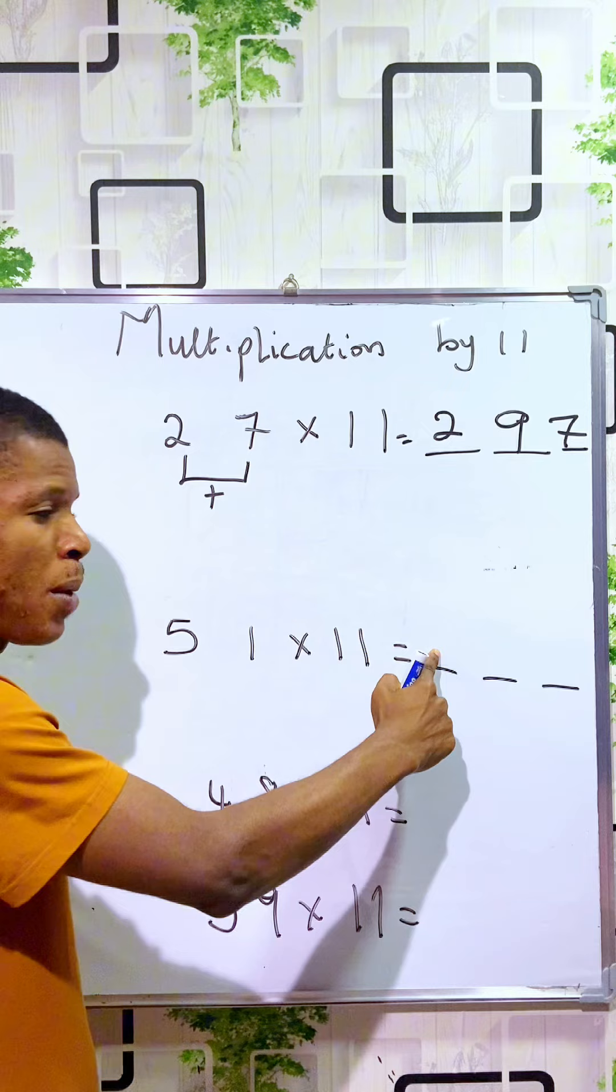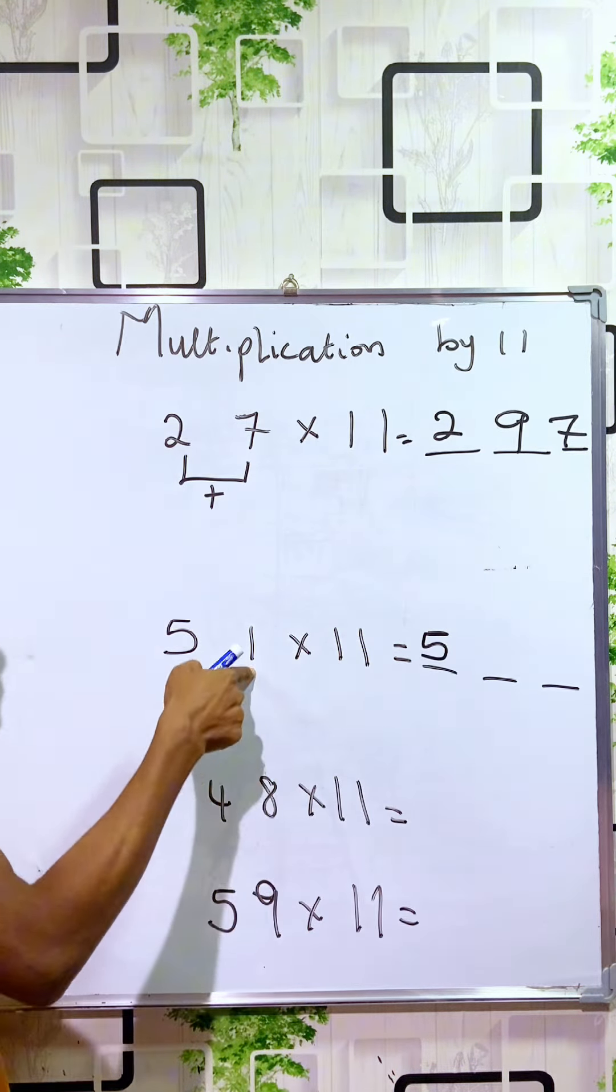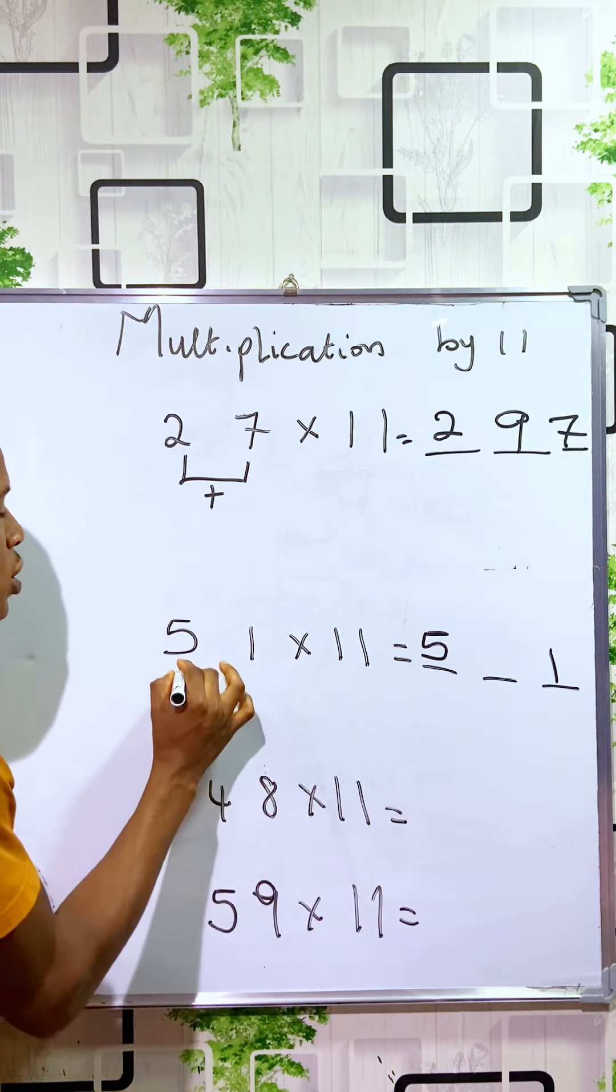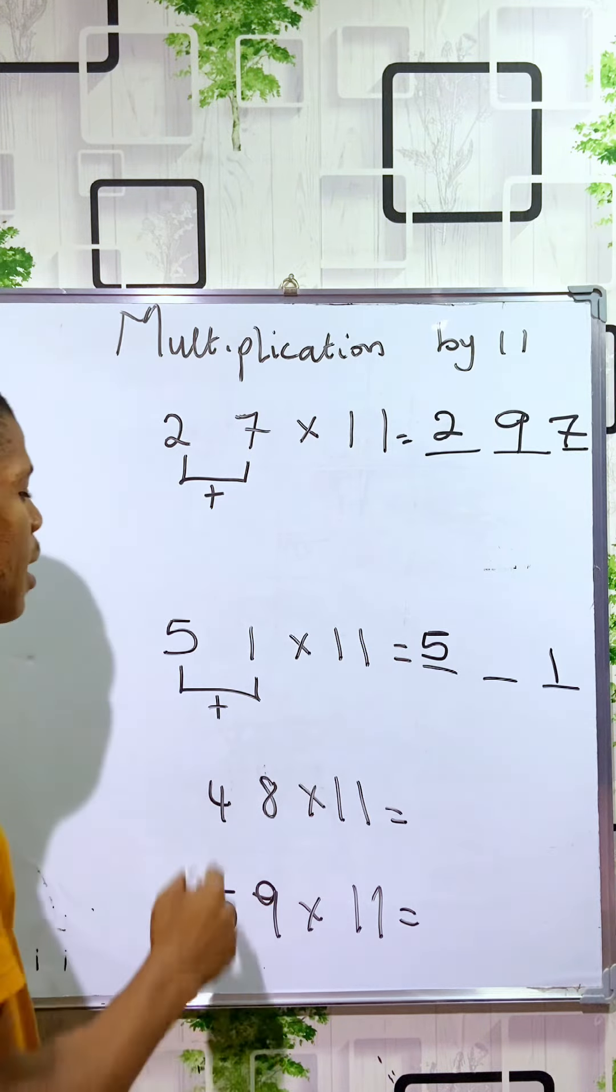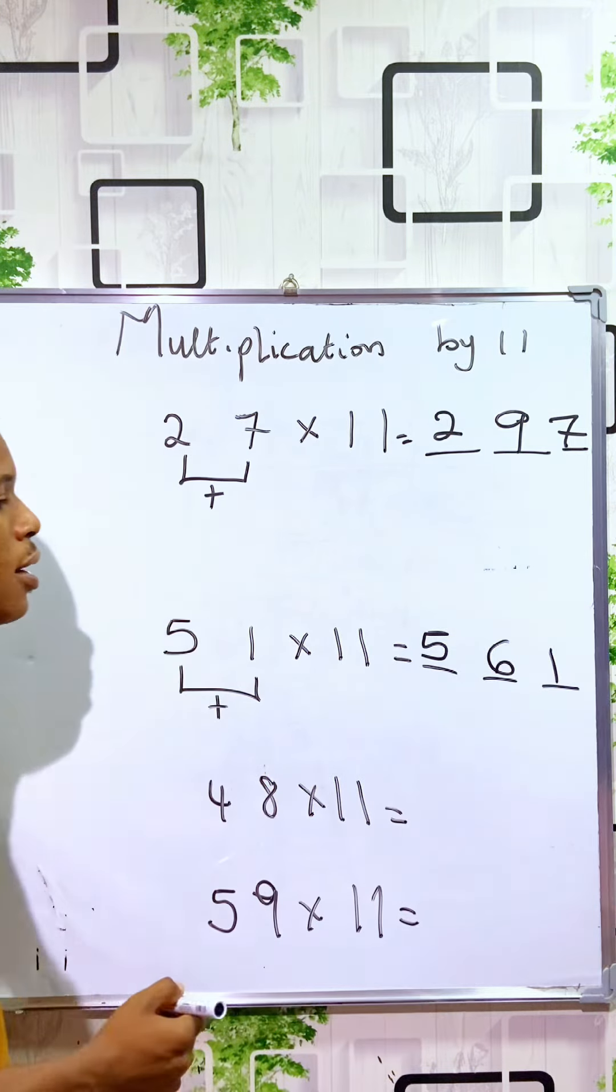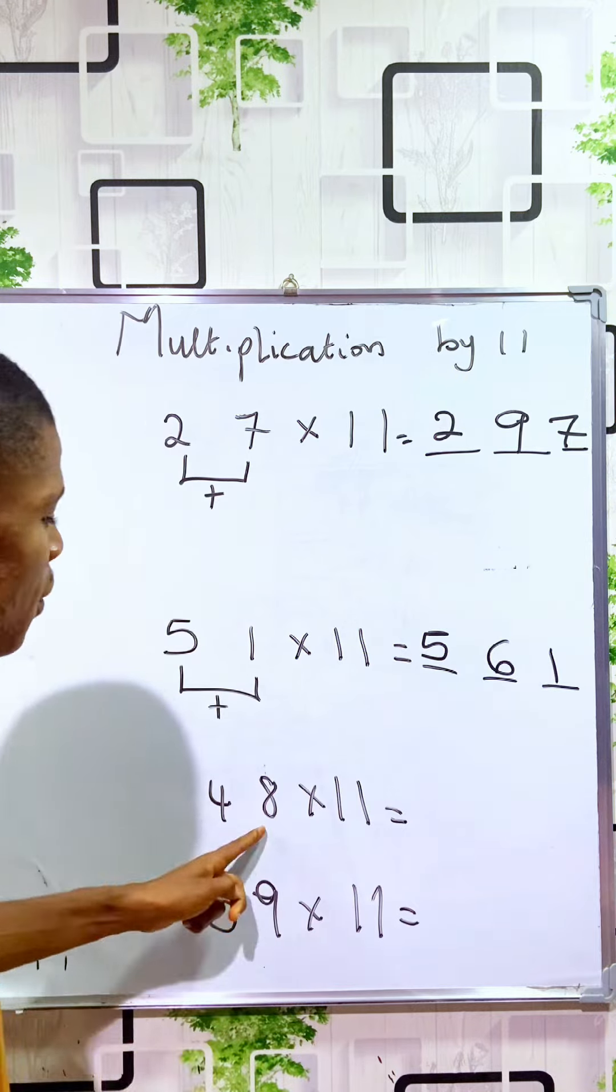The first space will be covered by the first digit, 5. The last space will be covered by the last digit, 1. Then for the middle term, we just add the two digits that make up the number. Five plus one is six, so 51 times 11 is 561.